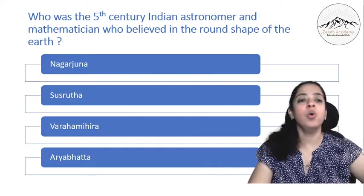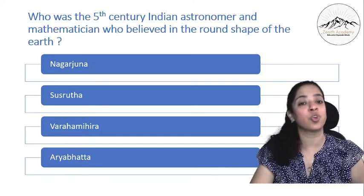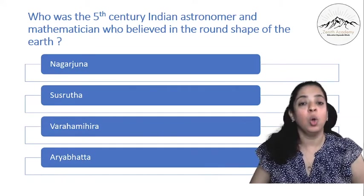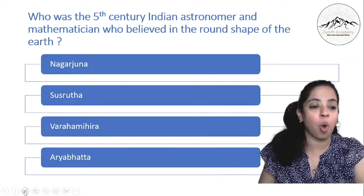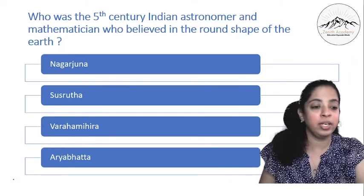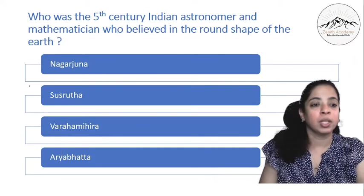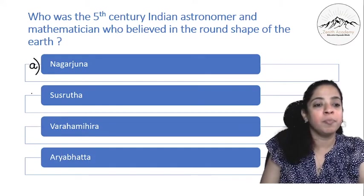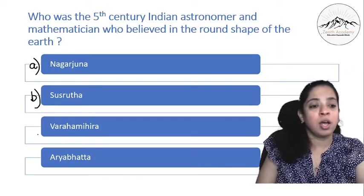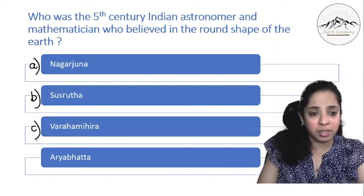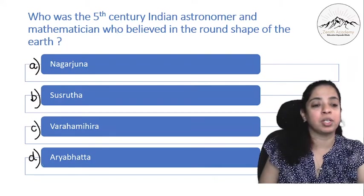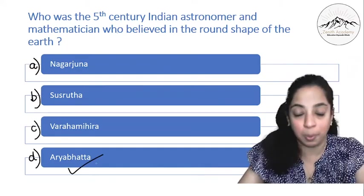First question. Who was the 5th century Indian astronomer and mathematician who believed in the round shape of Earth? So read the options very carefully. Was it Nagarjuna or Susruta or Varahamihira or Aryabhatta? So yes the correct answer is Aryabhatta.